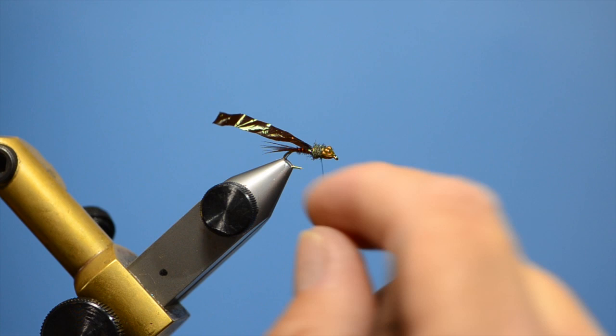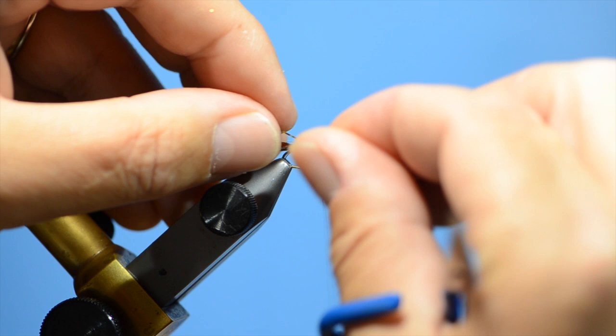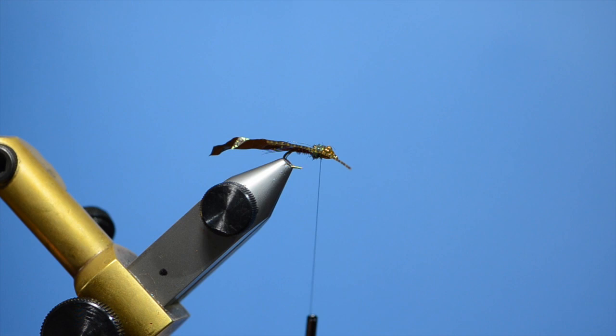Now I am going to put my legs right in this little groove I have created. I am using a root beer micro grizzly leg from hairline. Pull those and get them into position. It takes a wrap or two to set those and then we will lay our dubbing over the top to finish off securing them.